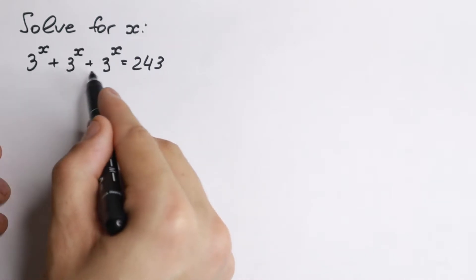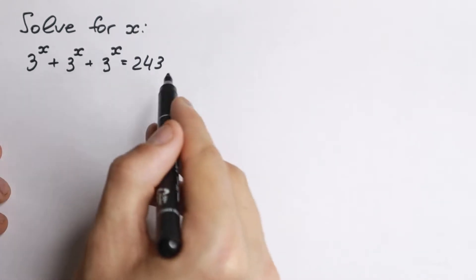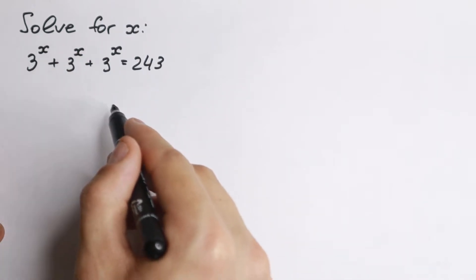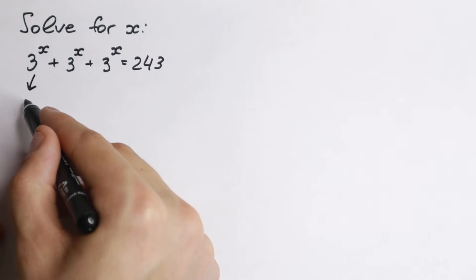First of all we have the sum of three same elements, so 3^x, 3^x and 3^x. For those who don't understand the final answer of this addition, I want to write, for example, right here 3^x will be equal to y.